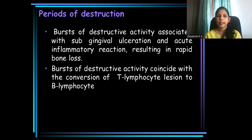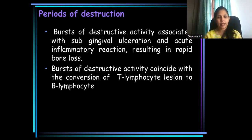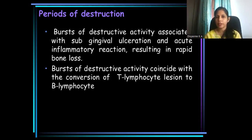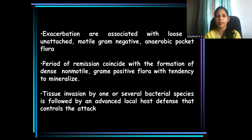Periodontal disease has got periods of destruction as well as periods of rest. Periods of destruction are always associated with ulceration — gingival ulceration, pocket epithelial ulceration — as well as inflammatory infiltration both in the gingival tissues and in the underlying alveolar bone. It has been found that there occurs a conversion of cells from T lymphocytes to B lymphocytes during the periods of bone destruction.